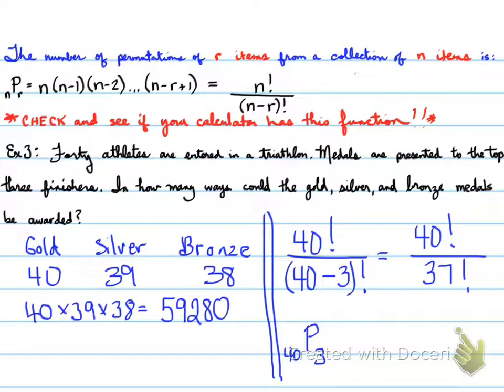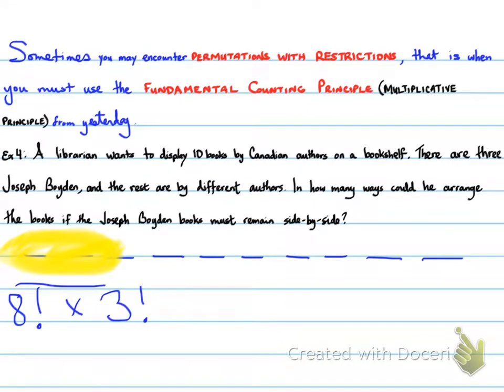We take eight factorial times three factorial to find out that we have a number of... Eight factorial times three factorial is going to equal 241,920. Because remember that the three books are in these slots. That counts as one, two, three, four, five, six, seven, eight. Because remember, I can put these three books anywhere I want in this slot, or they can go in any three that I can circle.